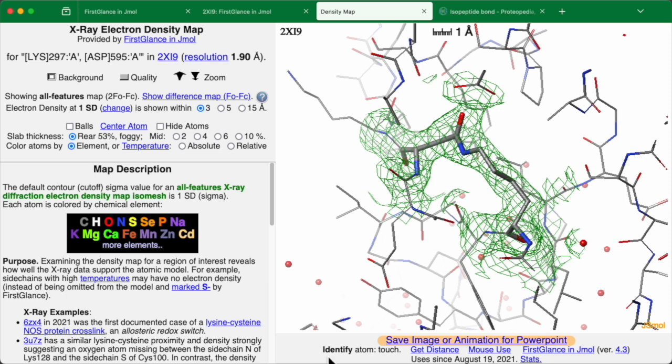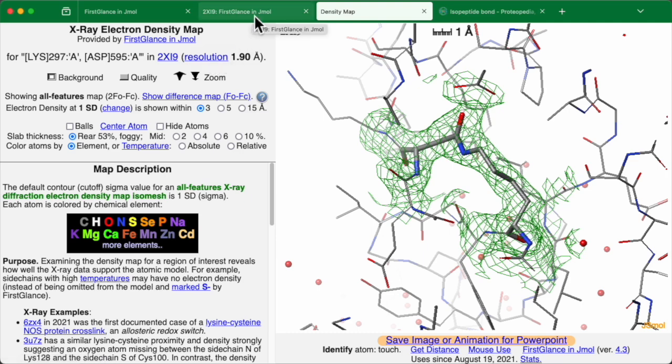If you'd like to review what resolution means for crystallographic experiments, just click on this link. And by the way, if we go back to FirstGlance, we see that it says here resolution 1.9 angstroms and characterizes it that many atoms will be clearly seen. If you want more information, click on this question mark.